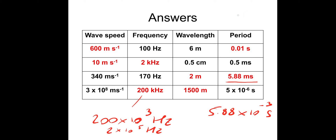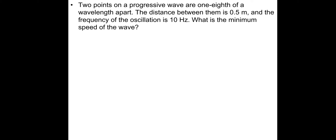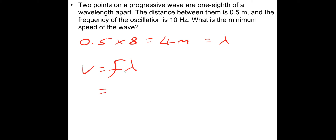So let's have a look at the next question. Two points on a progressive wave are one eighth of a wavelength apart. The distance between them is 0.5 meters and the frequency of the oscillation is 10 hertz. What is the minimum speed of the wave? If one eighth of the wave is 0.5 meters, then 0.5 meters times 8 gives us a wavelength of 4 meters. Then V equals f lambda: frequency is 10 hertz multiplied by the wavelength of 4 meters, so that gives 40 meters per second.